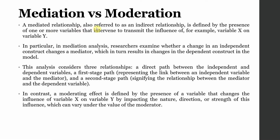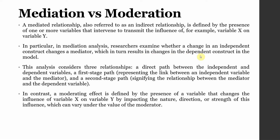A mediated relationship, also referred to as an indirect relationship, is defined by the presence of one or more variables that intervene to transmit the influence — for example from variable X to variable Y. In mediation analysis, researchers examine whether a change in the independent variable brings about a change in a mediator, which in turn results in changes in the dependent variable. So X influences M, and M influences Y.